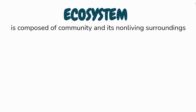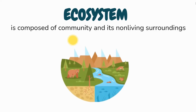An ecosystem is composed of a community and its non-living surroundings and physical components of the environment. Water, rocks, and dirt are parts of the ecosystem. Ecologists may study the populations, communities, or whole ecosystems.